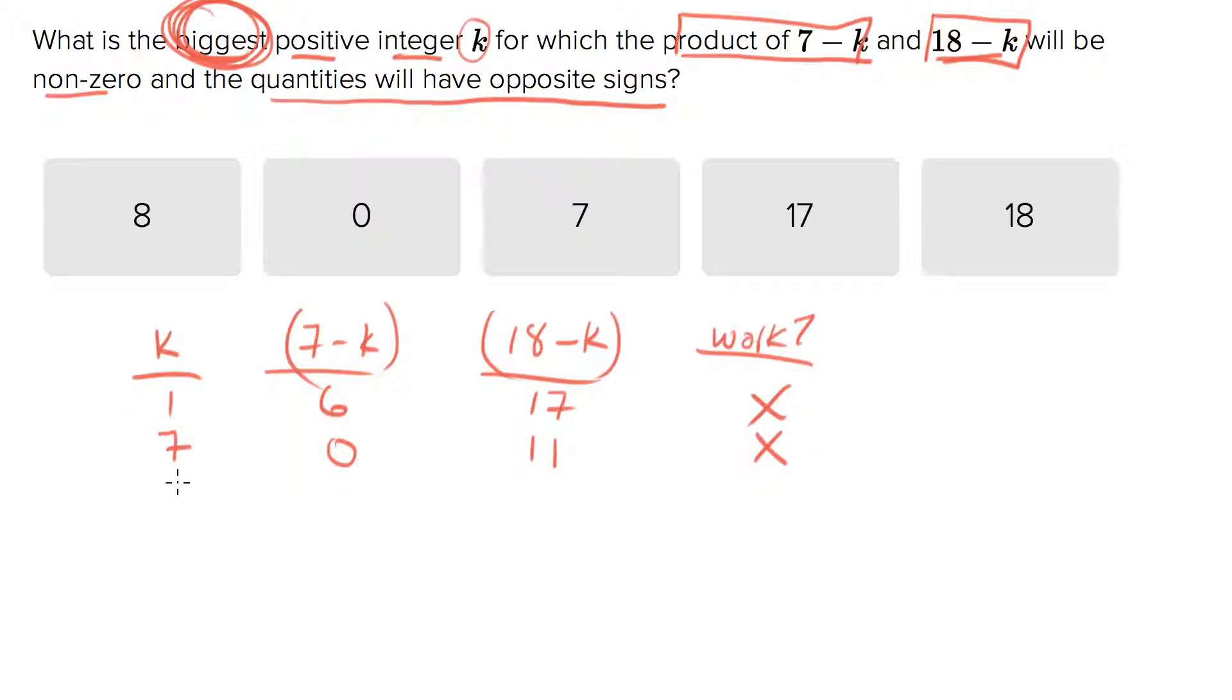Let's go to k equals 8. Now we'll end up with 7 minus 8 is negative 1, 18 minus 8 is 10. Does this meet all our rules? Positive integer k, we track both quantities, it's non-zero, the quantities are opposite signs. Does it work? Yes.